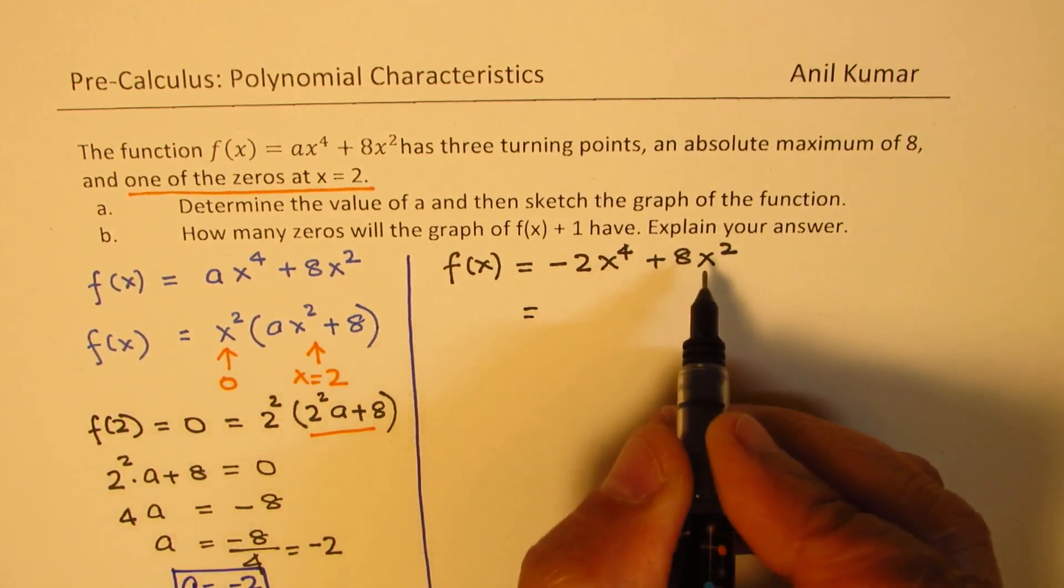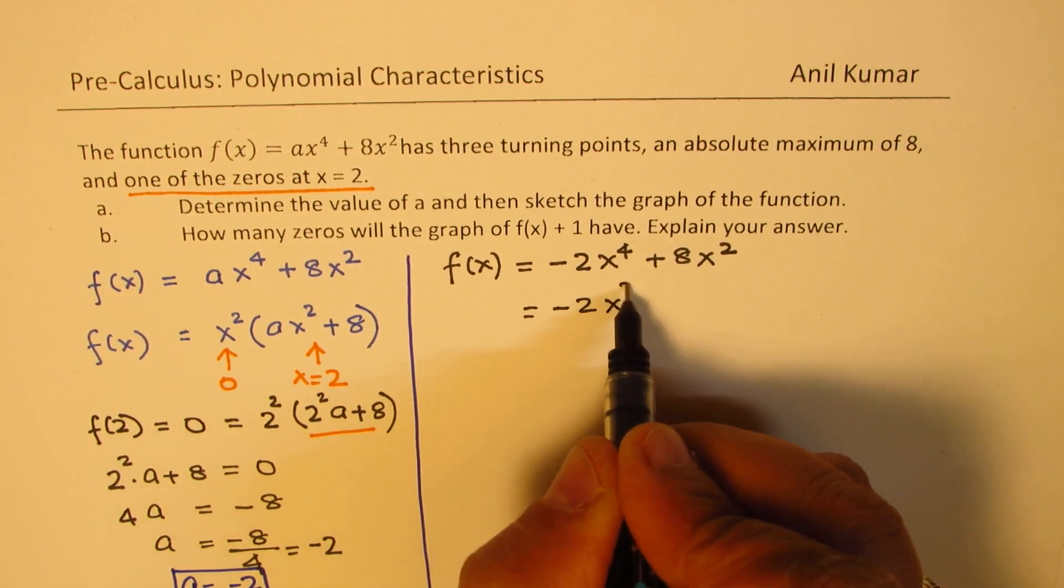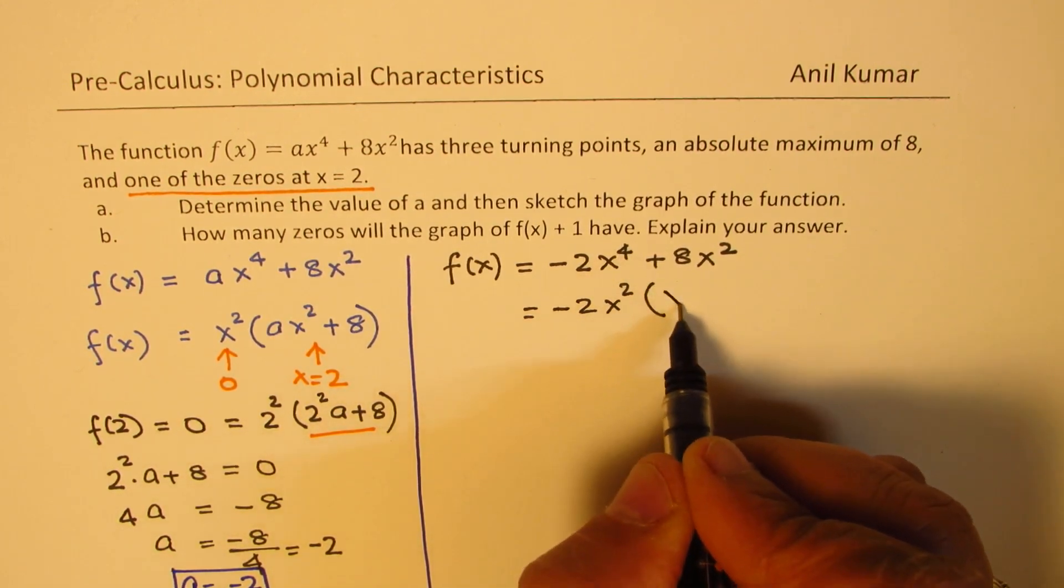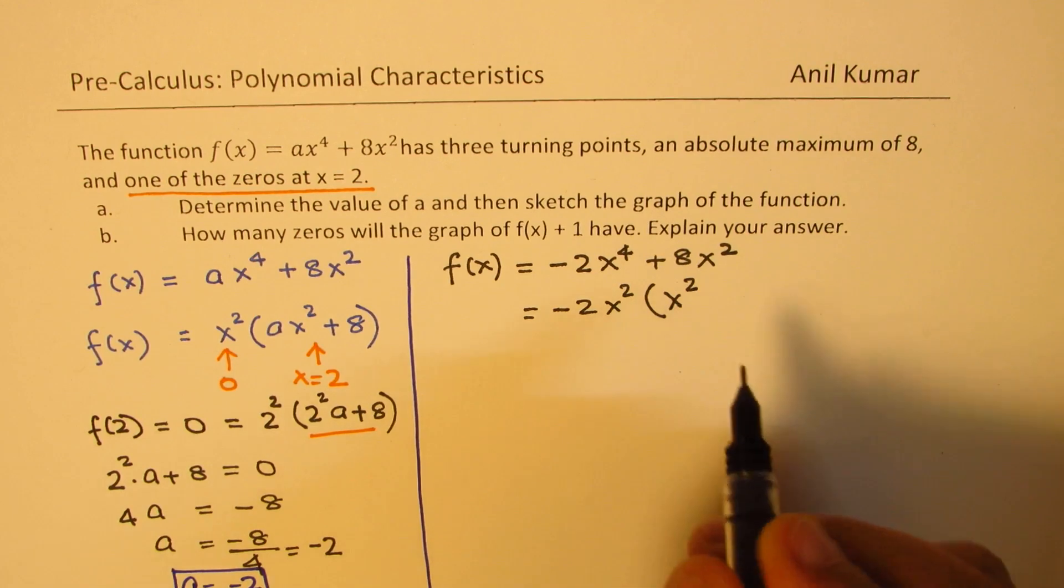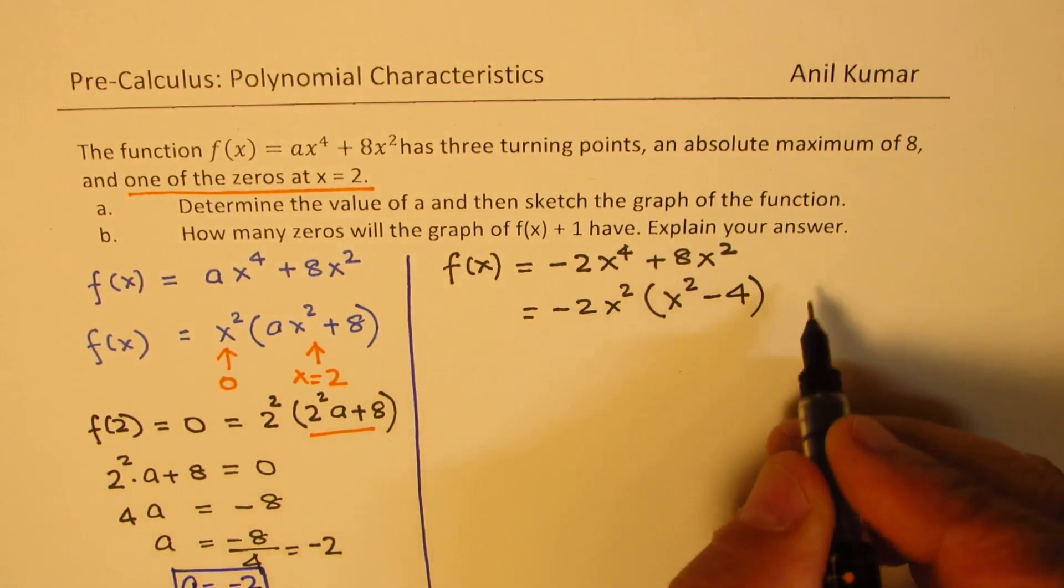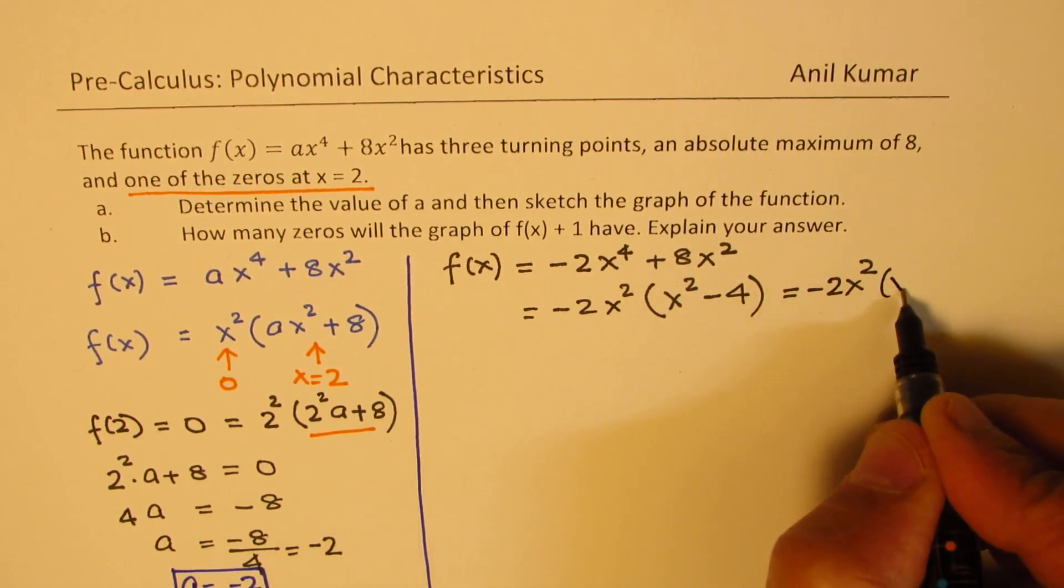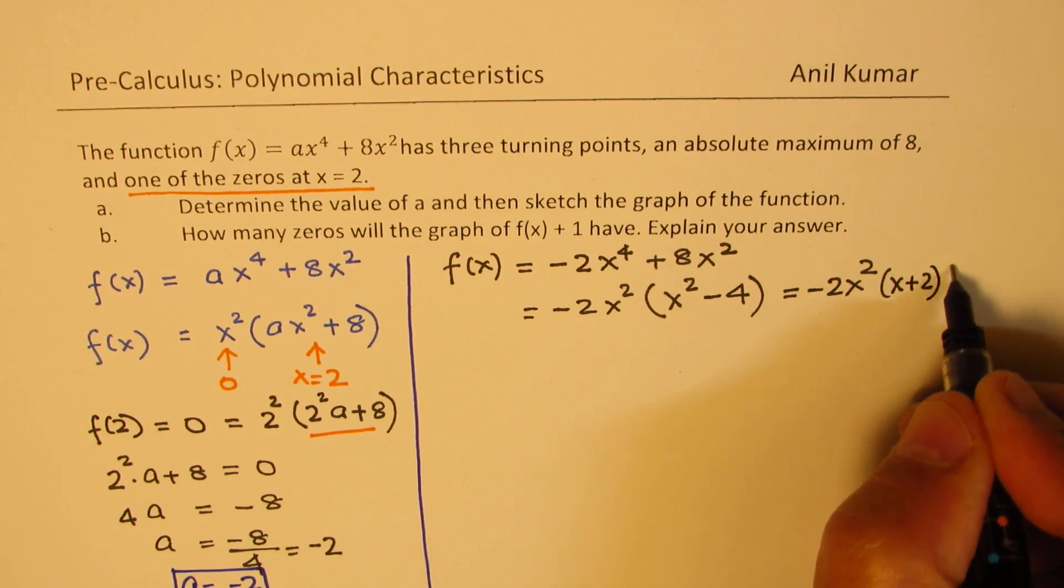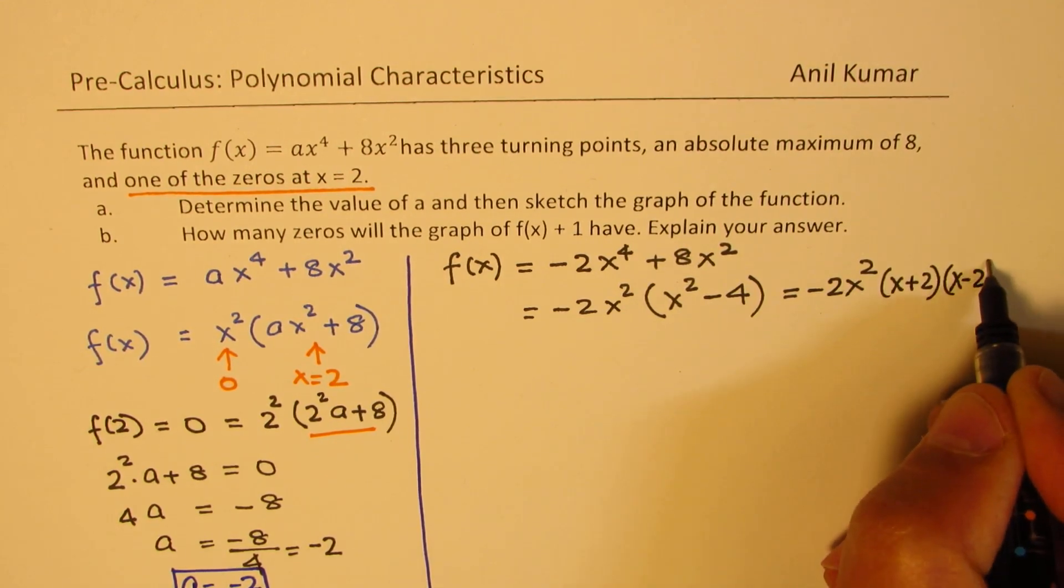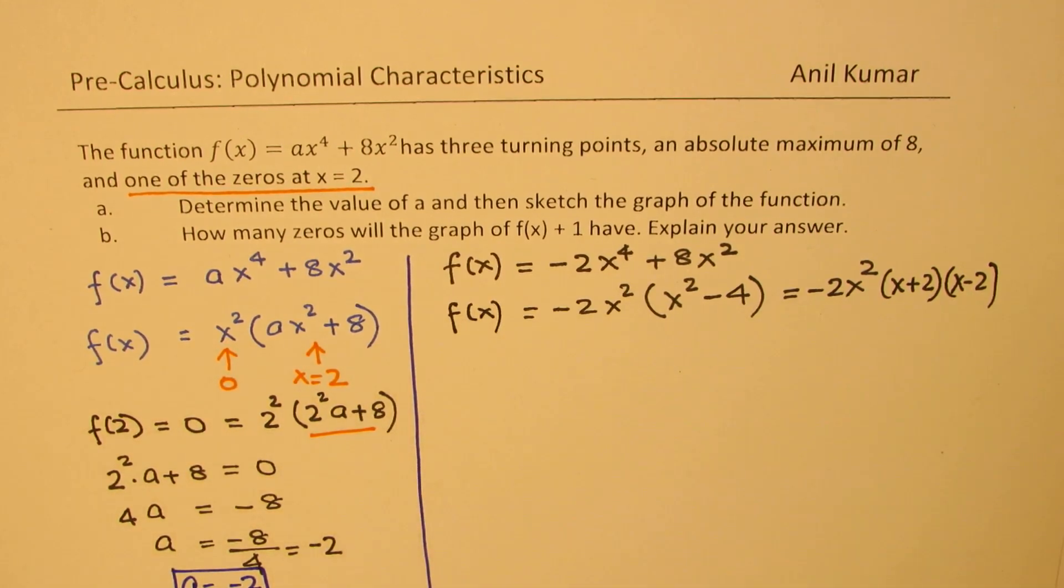Now let's again factor. We can factor minus 2x squared. We are left with x squared, dividing 8 by minus 2 gives us minus 4. This can be written as minus 2x squared times (x + 2) times (x - 2). We have factored this and we have three zeros.